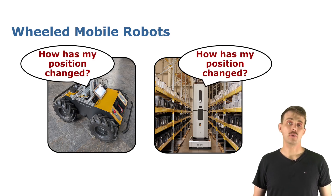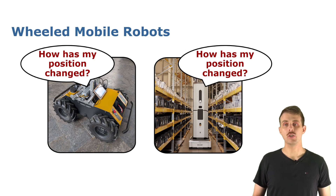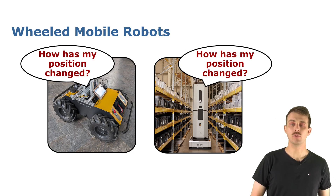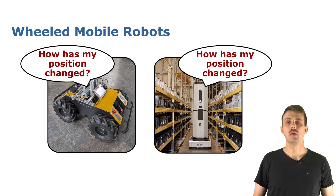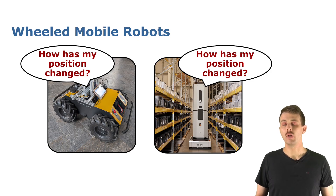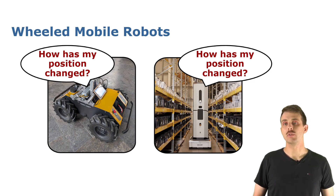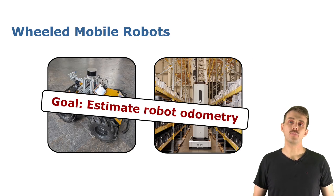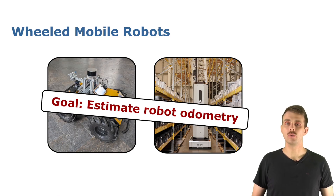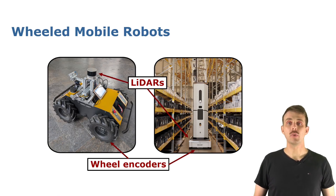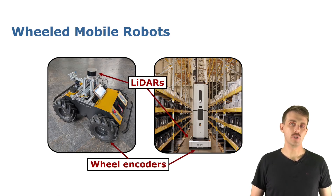Both these platforms need to estimate how their position has changed over time — so the position and the orientation. In contrast to localization where we localize in a pre-built given map, we now want to estimate the relative motion of the platform. This task we call robot odometry and we can use multiple sensors to do that.